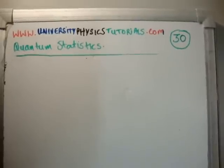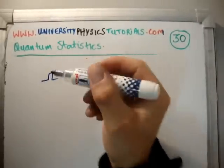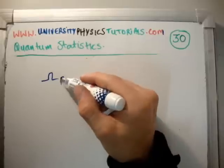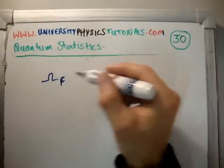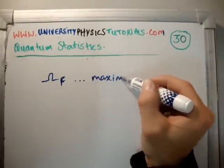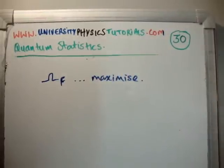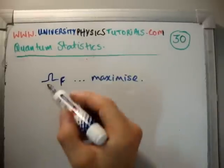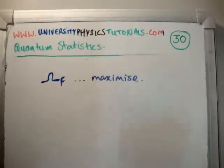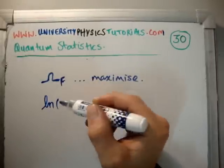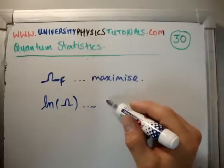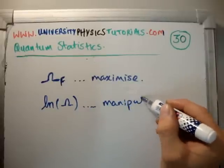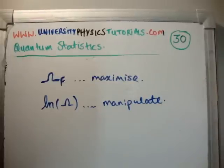So, a quick recap of what we're going to do. In a previous video we got a function for the multiplicity for bosons. In order to find out the most probable distribution, we're trying to maximize the multiplicity — the most probable distribution is the one with the highest multiplicity. It turns out that maximizing the multiplicity function itself is difficult because of its functional form, so instead what we do is maximize the logarithm of the function, which allows us to manipulate the multiplicity into an easier function.